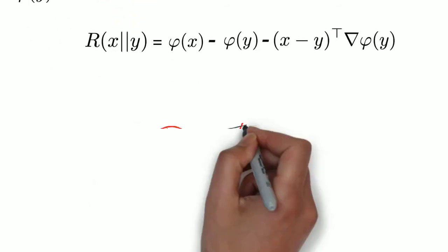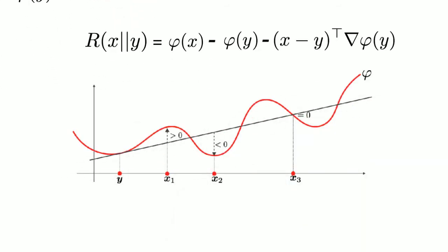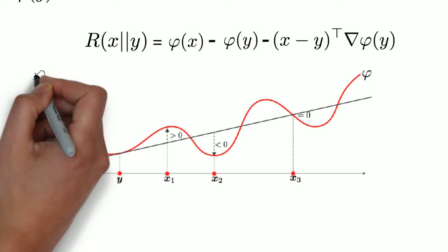However, when phi is not convex, this residual can be positive, negative, or zero.